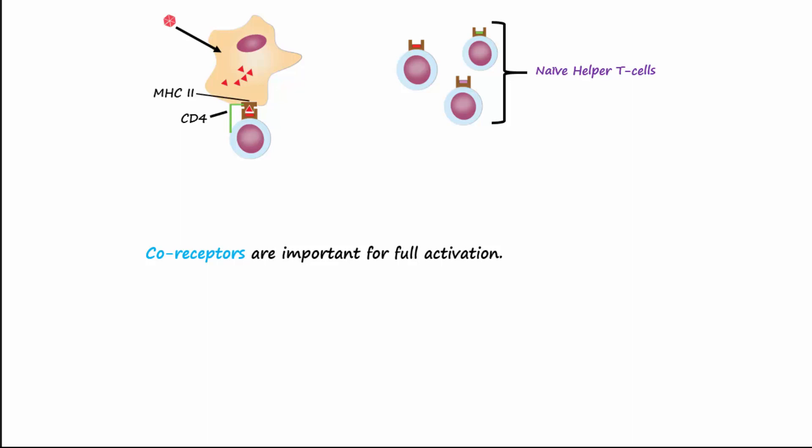CD stands for cluster of differentiation. CD28 on the T helper cell will bind to the co-stimulatory molecule B7 on the antigen presenting cell. After binding of the receptors, co-receptors, and co-stimulatory signals elicits a strong interaction between the two cells, the helper T cell will begin to express IL-2 receptors on its surface.